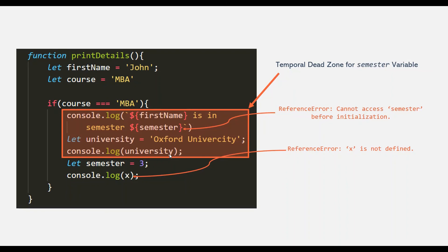So this is all about hoisting in JavaScript. Hoisting is a topic which is frequently asked in interviews. If an interviewer asks you what hoisting is, you can say that in JavaScript there are some variables and functions which can be used before they are declared — and that is called hoisting. But if you can also explain how hoisting works internally, that leaves a different impact on the interviewer. And that's what you learned in this lecture. Thank you for listening. Have a great day.